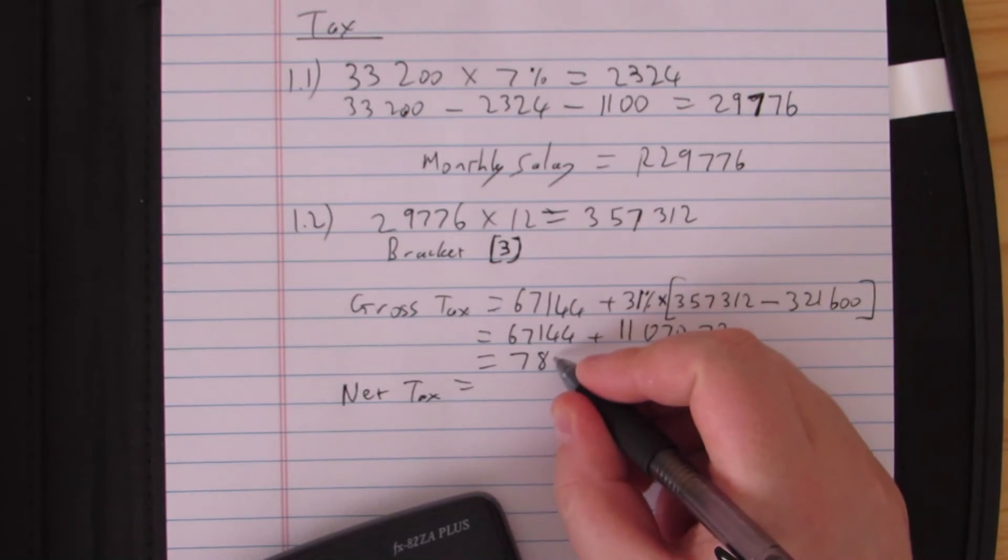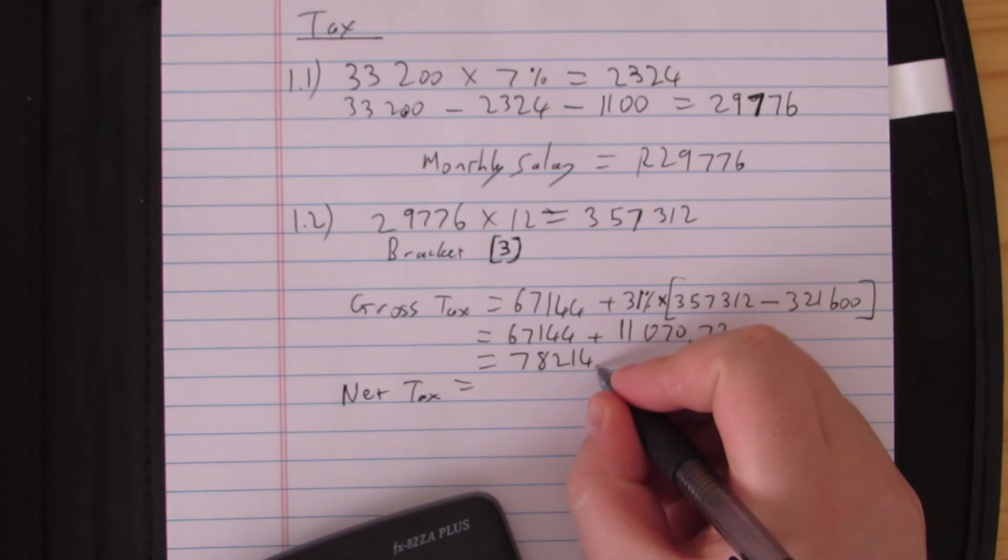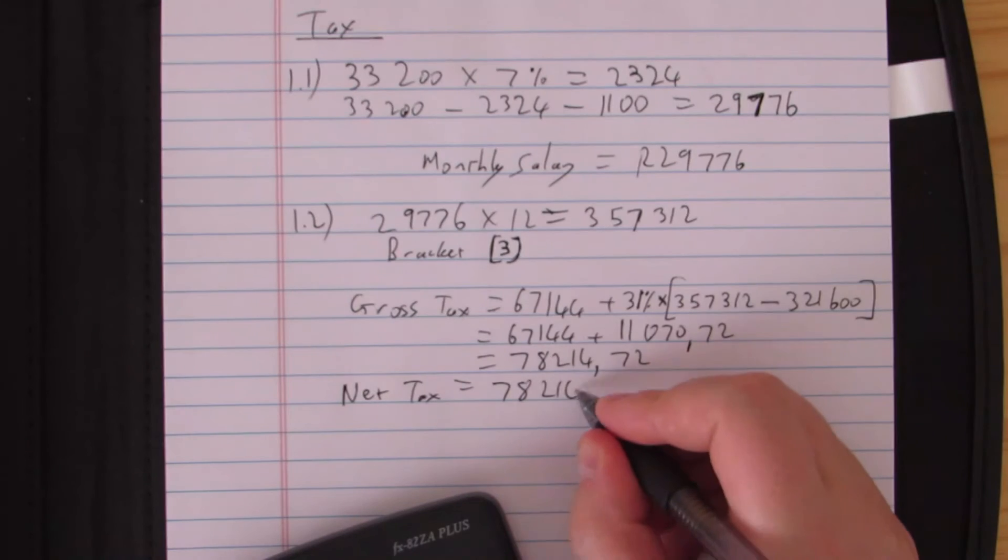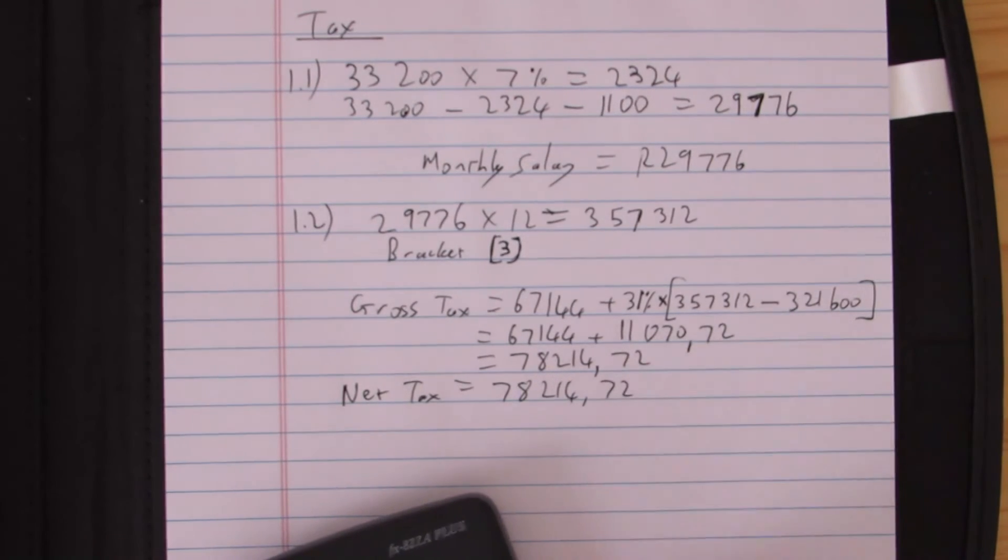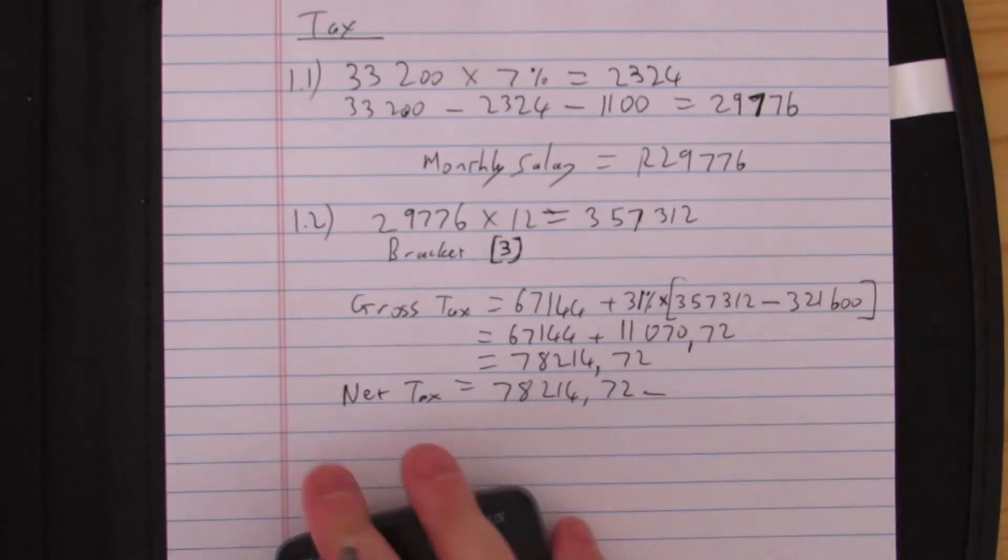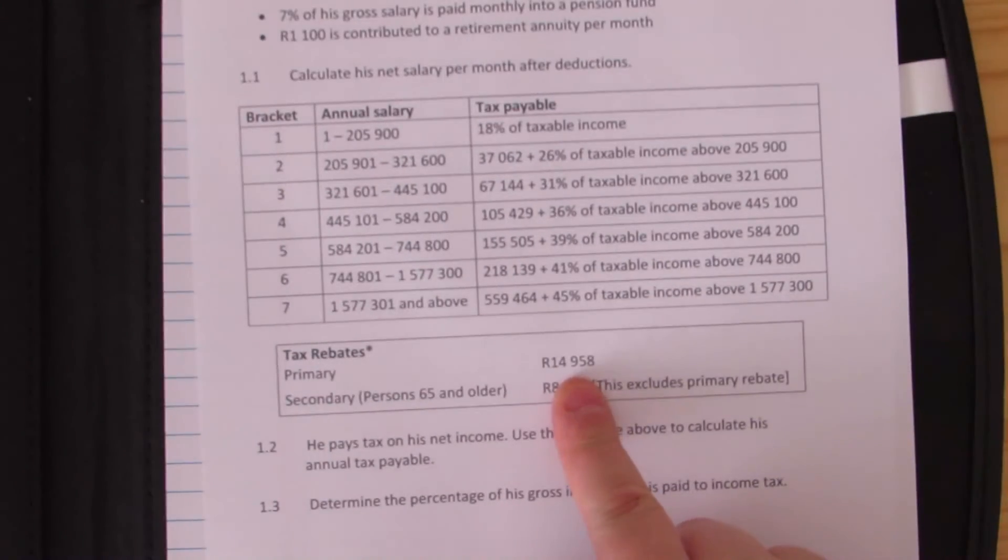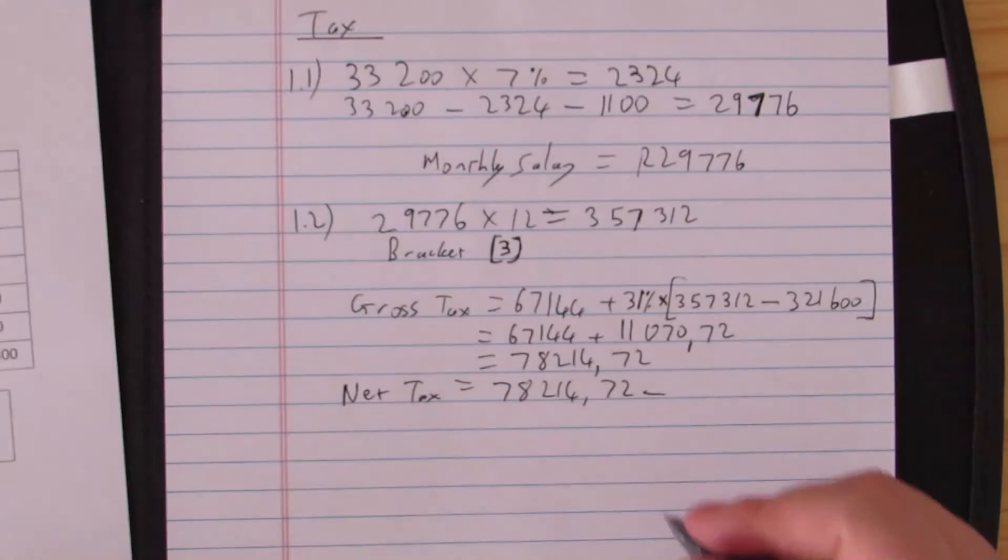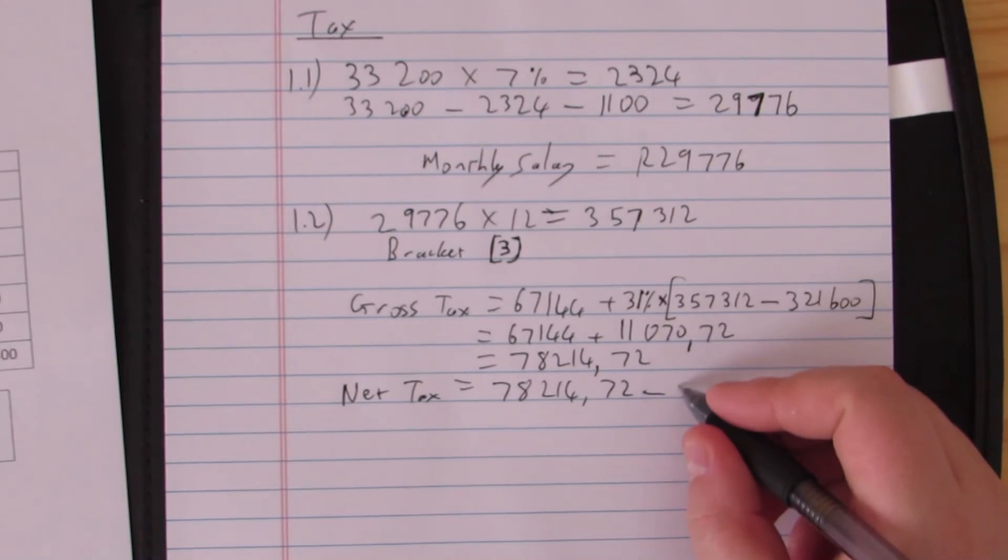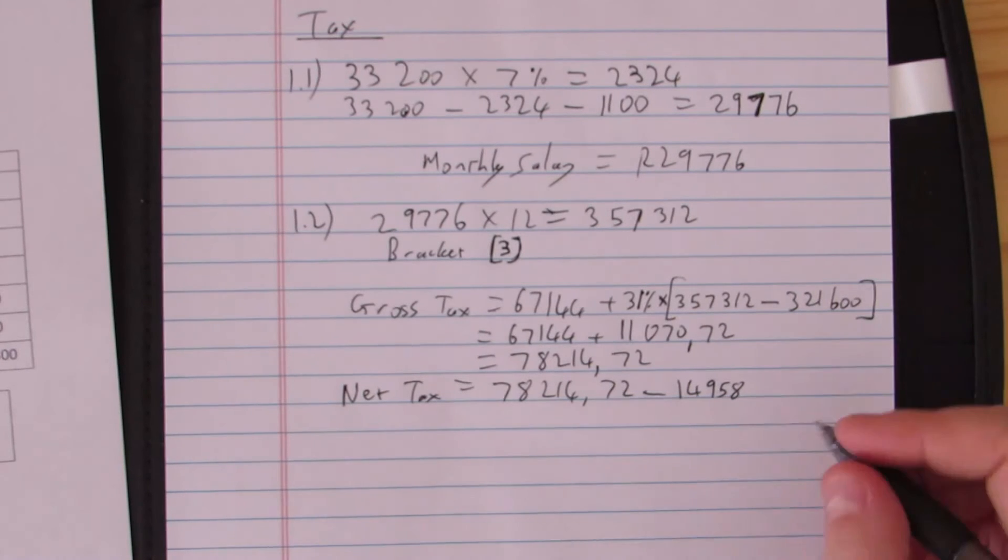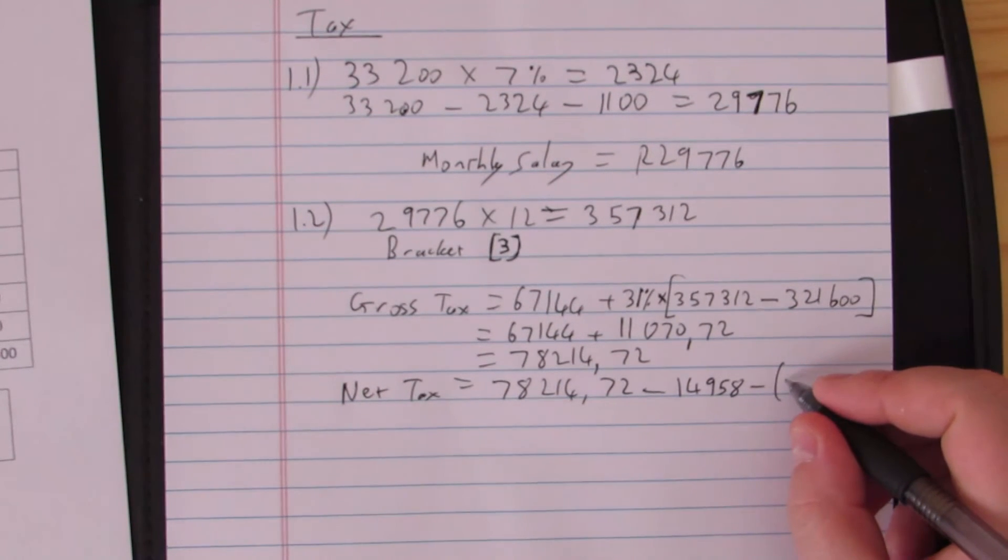67,144 plus 11,070.72, so altogether he's paying 78,214 rand and 72 cents. We need to take away the rebate. Because he is 37 years old, we're going to take the primary rebate for people who are under the age of 65. So that's going to be 14,958.